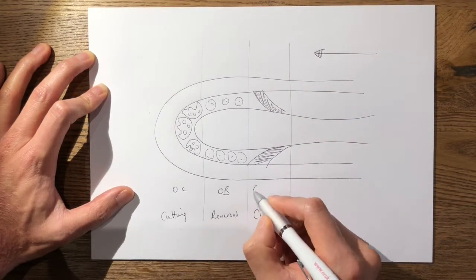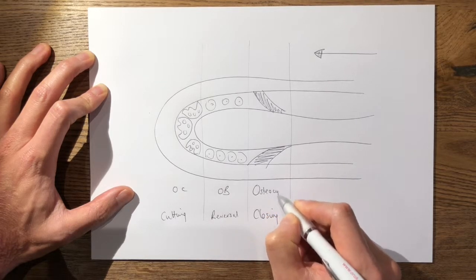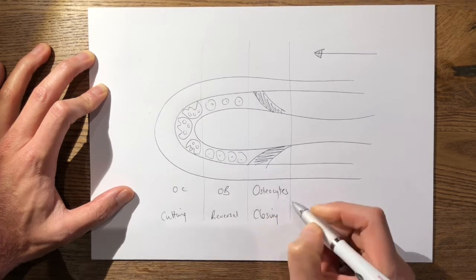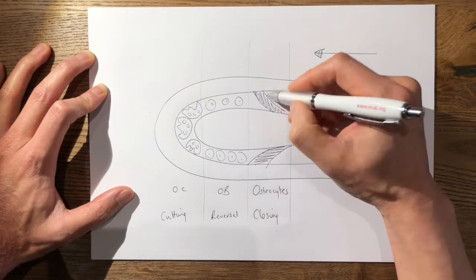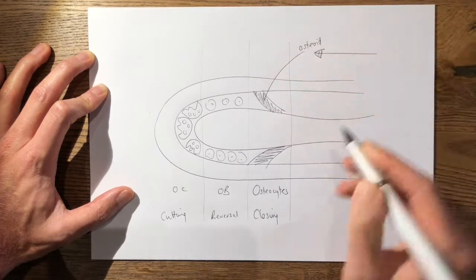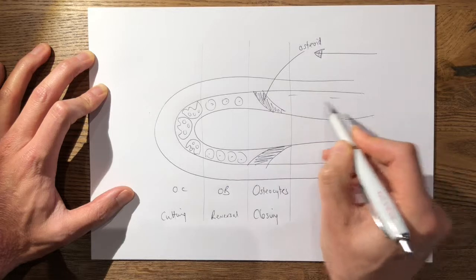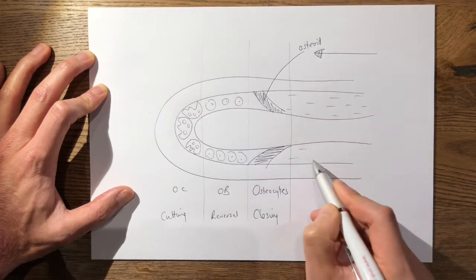In the closing zone, the cell type that is predominant is your osteocytes or your bone lining cells. These are actually derived from osteoblasts and they tend to lay down osteoid, and then eventually behind it it'll start to become mineralized bone.